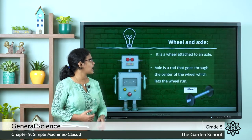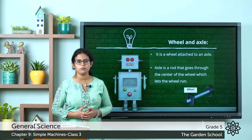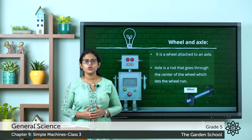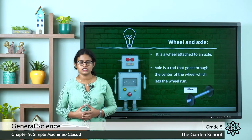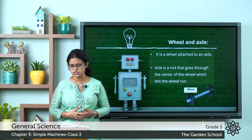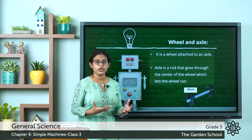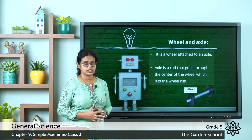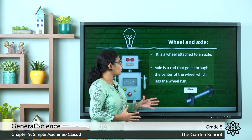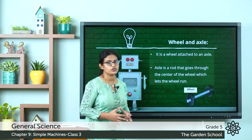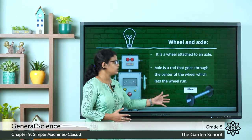Moving on to the next type of simple machine — wheel and axle. We use wheels in lots of things like cars, buses, and other vehicles. The wheel and axle consists of a wheel attached to an axle — the axle is a rod that goes through the center of the wheel, which lets the wheel run.